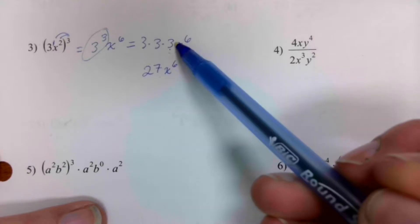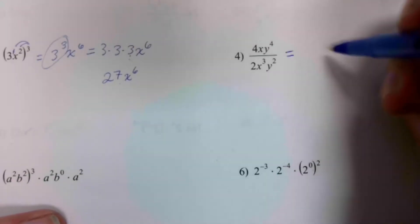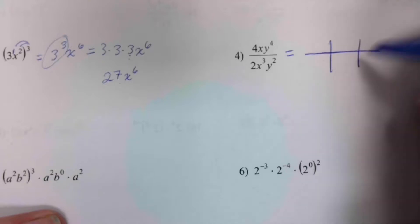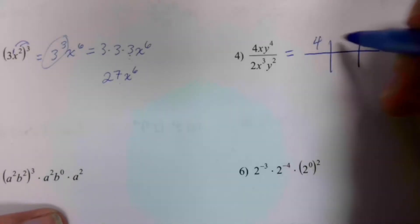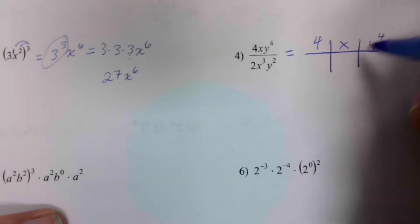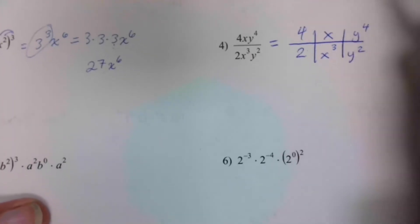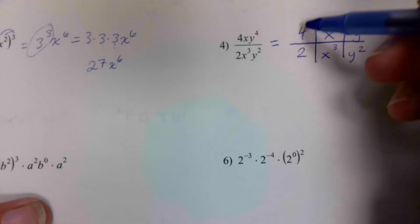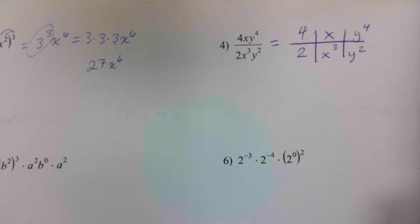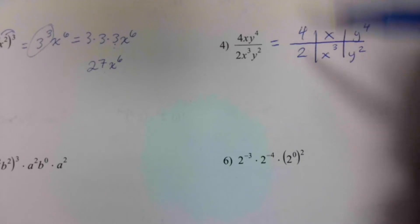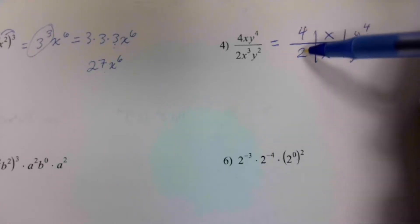First thing I do when I see a fraction is I start using my organizer: numbers first, letter, second letter, number letter letter. Notice that the x's are lined up and the y's are lined up and the numbers are lined up. I'm going to simplify each box individually.